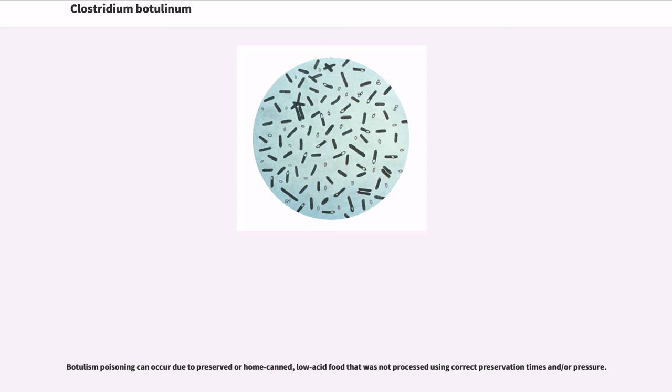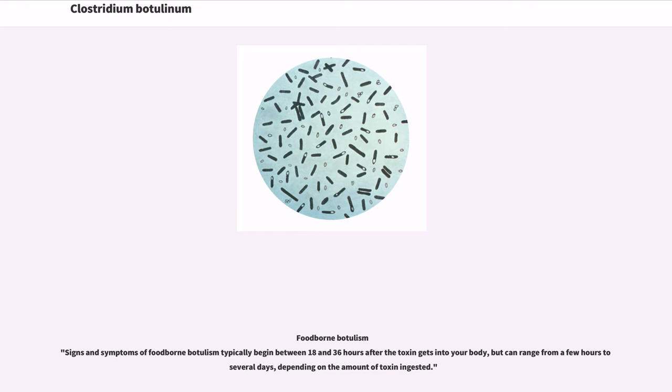Botulism poisoning can occur due to preserved or home-canned low-acid food that was not processed using correct preservation times and/or pressure. Foodborne botulism signs and symptoms typically begin between 18 and 36 hours after the toxin gets into your body, but can range from a few hours to several days, depending on the amount of toxin ingested.